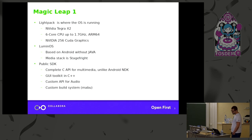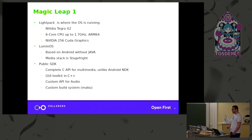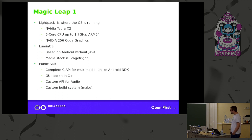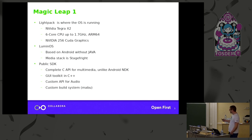The OS is called Lumos, it's based on Android but there is no Java — they do that likely to get vendor support from Nvidia. The media stack is straight from Android. There is a public SDK with a complete C API for everything. For the UI toolkits they have a C++ API. For audio they have custom APIs written from scratch, and they also wrote their own build system called MABU.